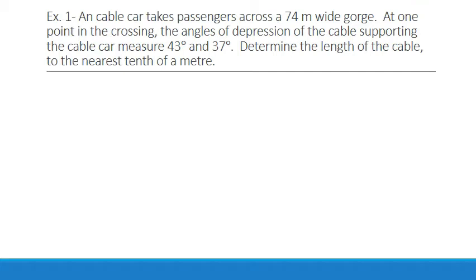Our first example. A cable car takes passengers across a 74 meter wide gorge. At one point in the crossing the angles of depression of the cable supporting the cable car measure 43 and 37 degrees. Determine the length of the cable to the nearest tenth of a metre.